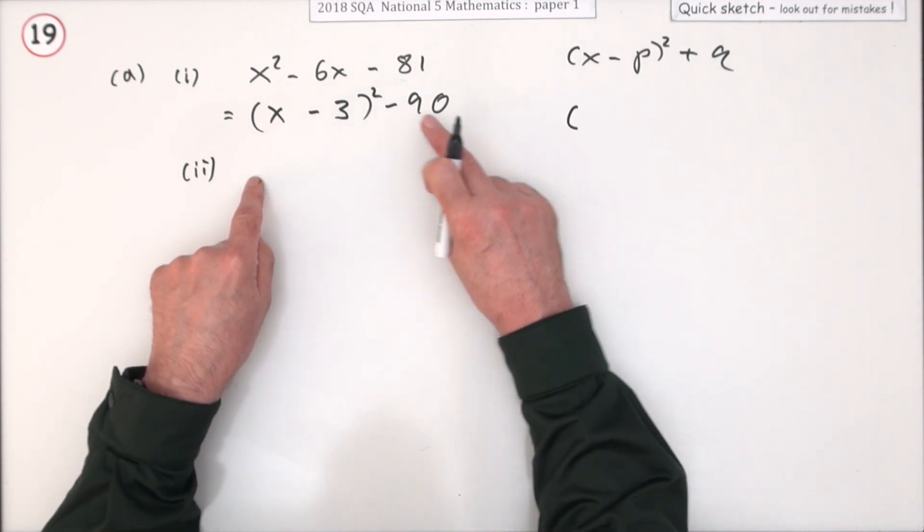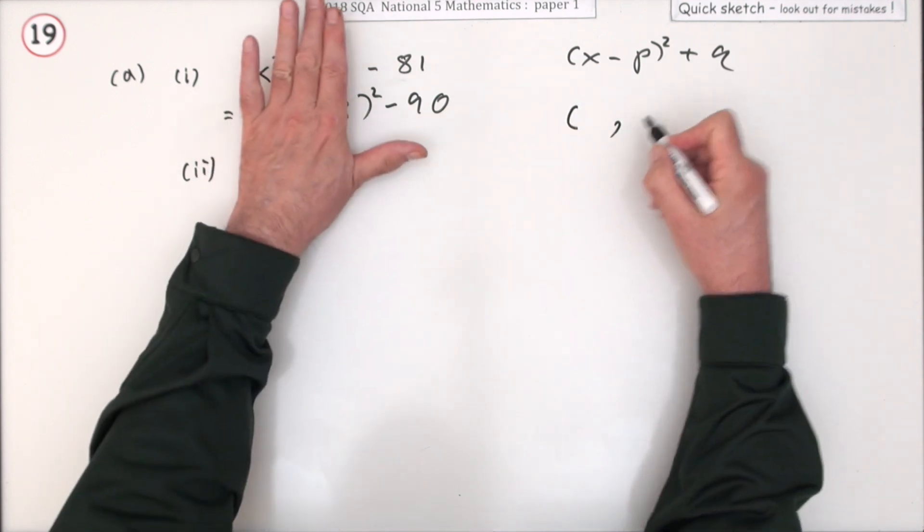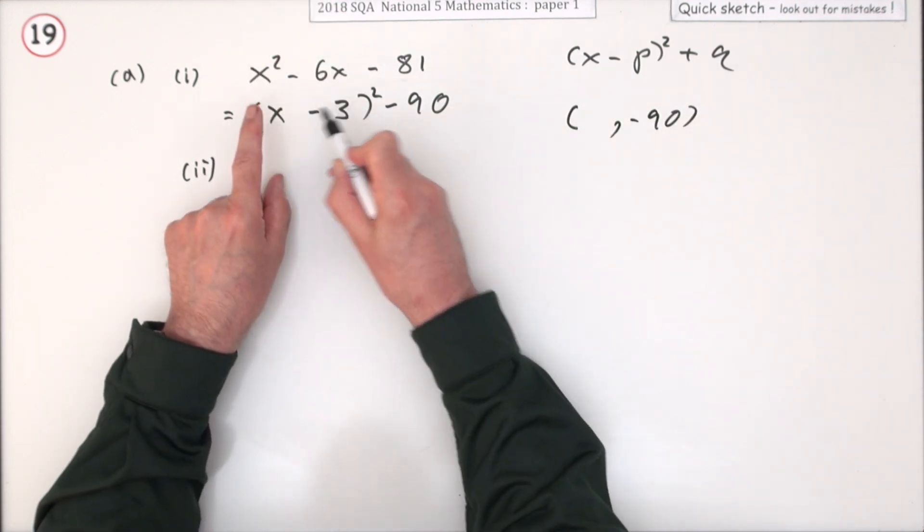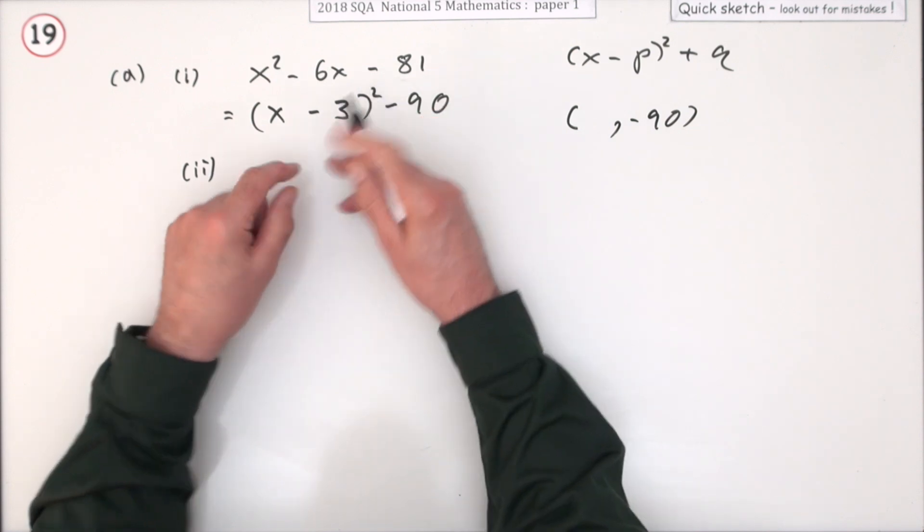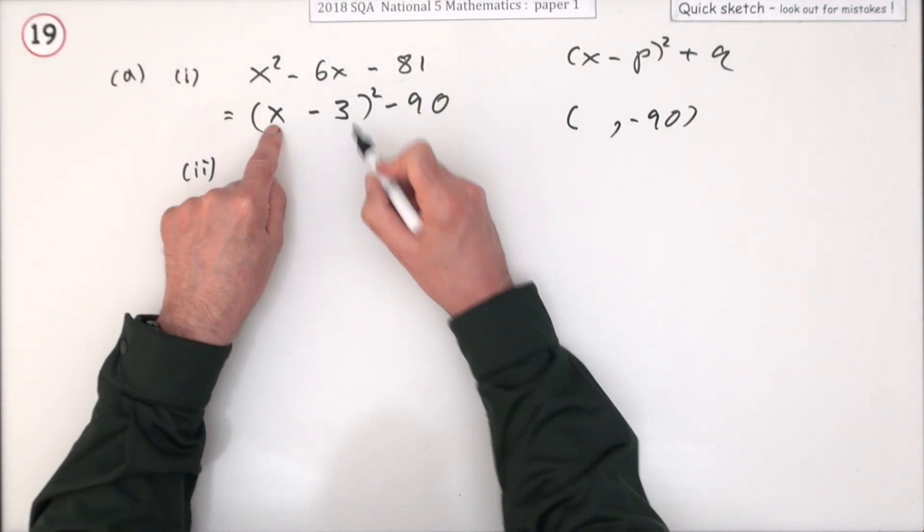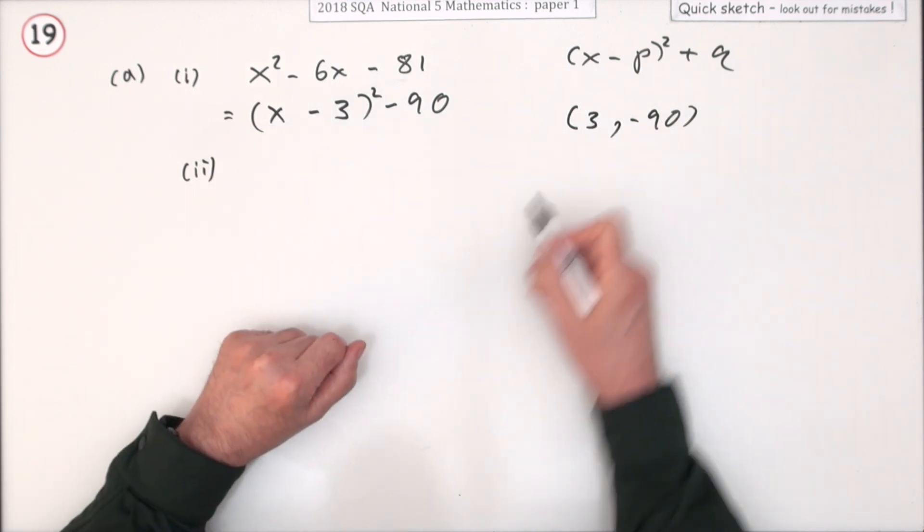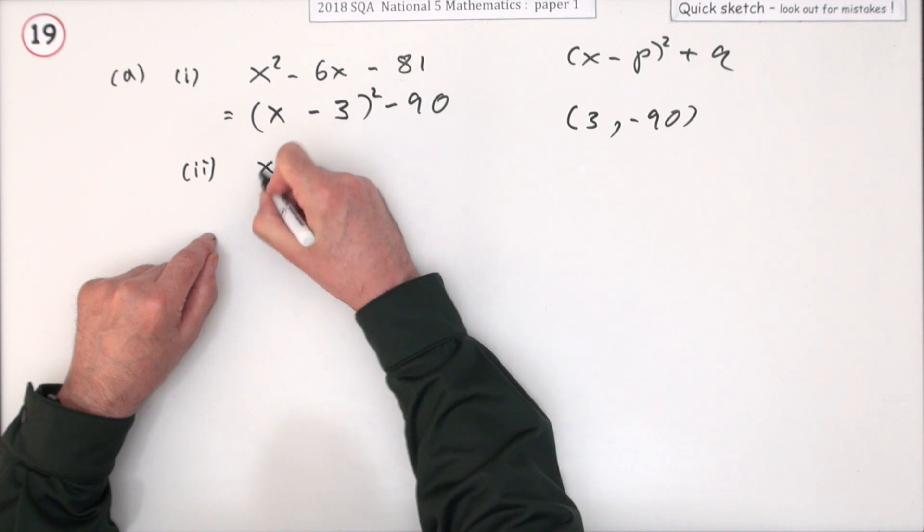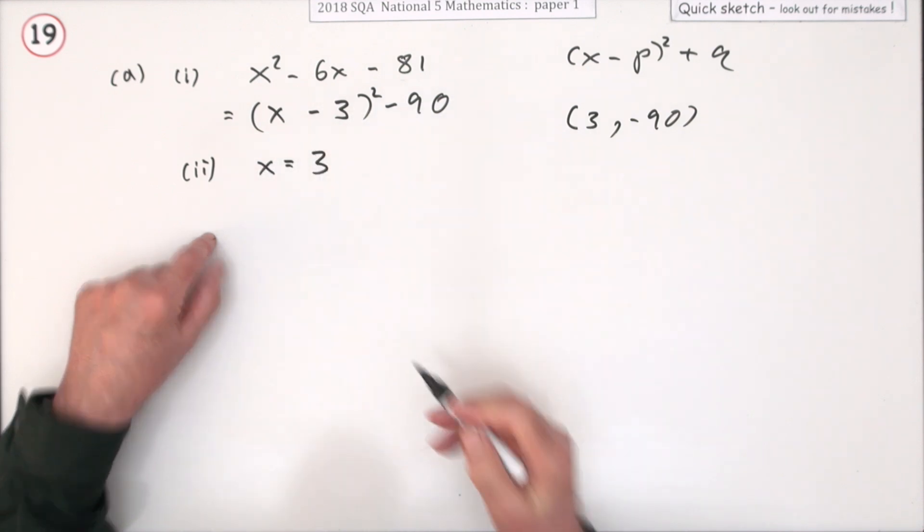The lowest this can ever come to will be negative 90. And that will happen when this bracket is zero. Because if you put anything else into that bracket when you square it it's positive and it's going to lift it up. So that bracket will be zero when x is three. So if that's the turning point in the graph the axis of symmetry must go through the turning point. So the axis of symmetry is x equals three.